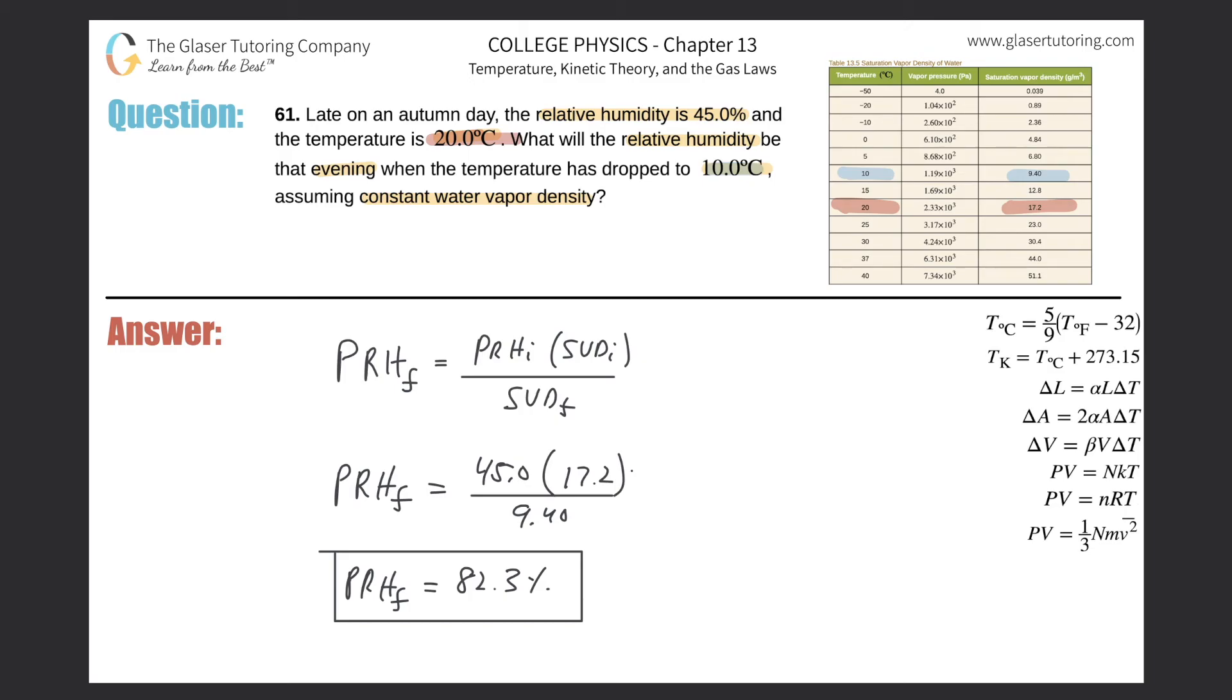And I could have asked the question then at what saturation vapor density finally does dew occur? And you're basically going to plug in 100 here, find this, and then I can ask for the temperature. And then once you find this saturation vapor density, you're going to go to the table and see where it fits in.